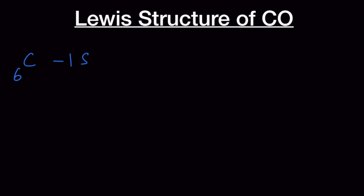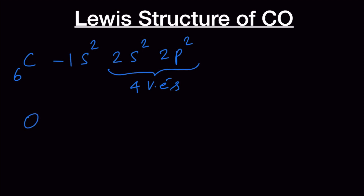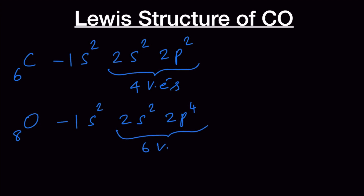Carbon has 6 electrons and its electronic configuration is 1s2 2s2 2p2, giving it 4 valence electrons — the 1s2 electrons are considered core electrons. The atomic number of oxygen is 8, so its configuration is 1s2 2s2 2p4, giving it 6 valence electrons.